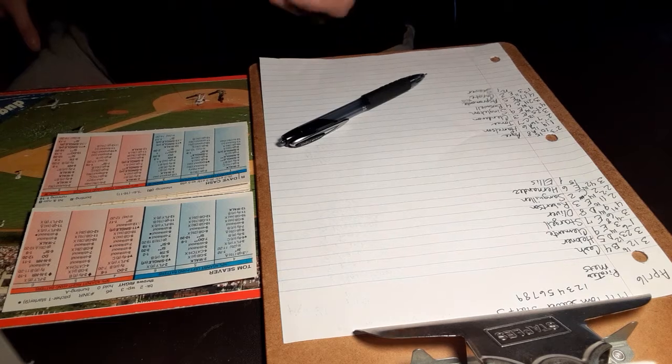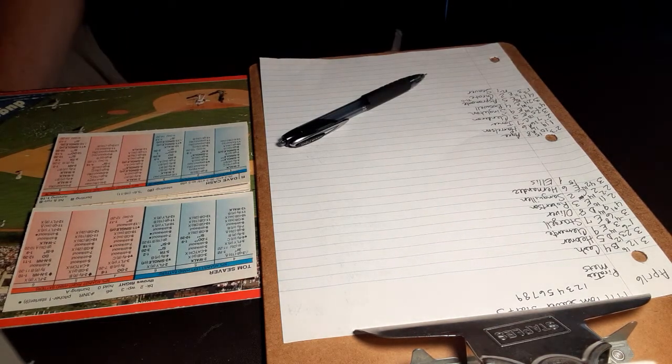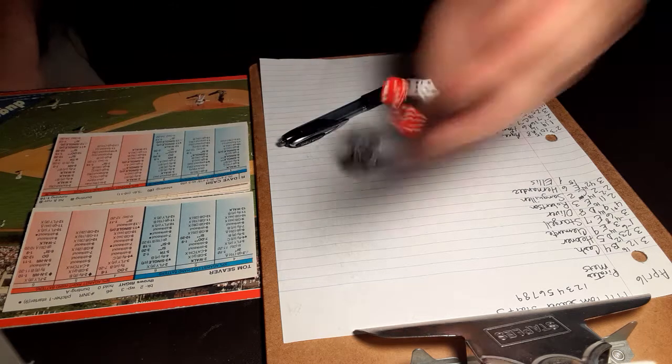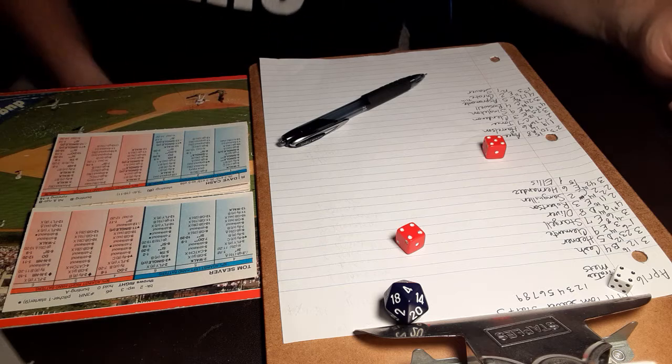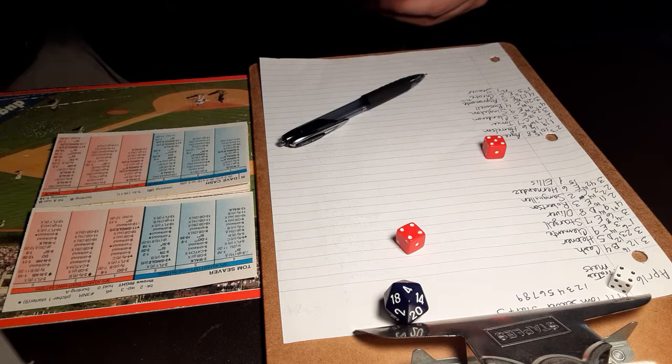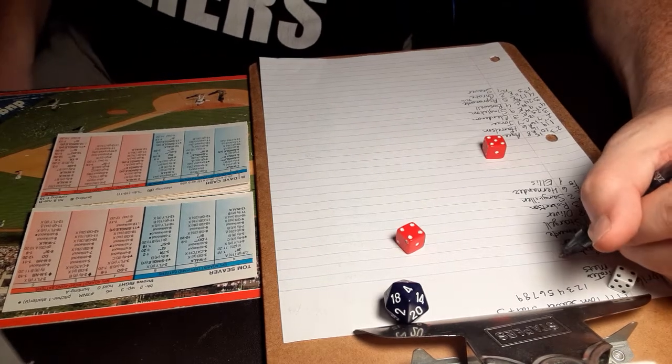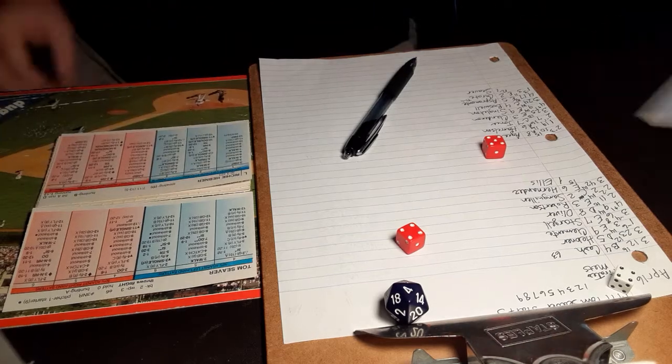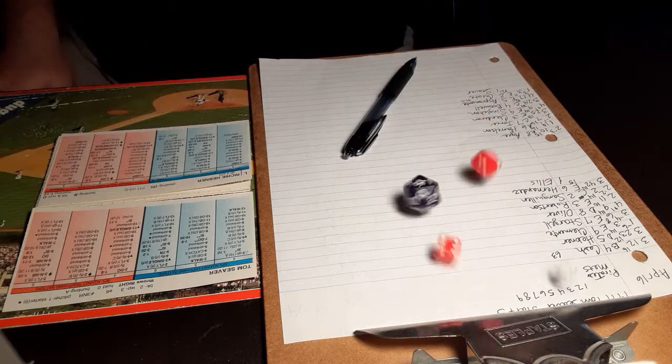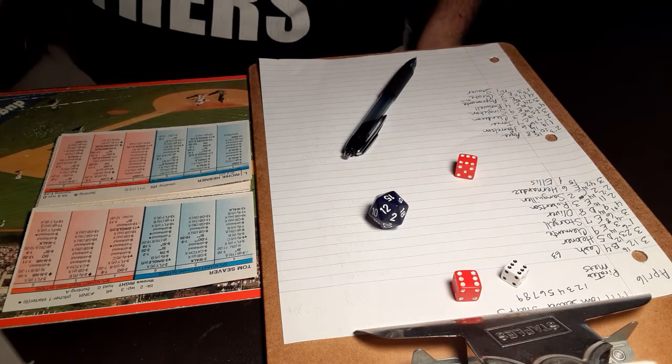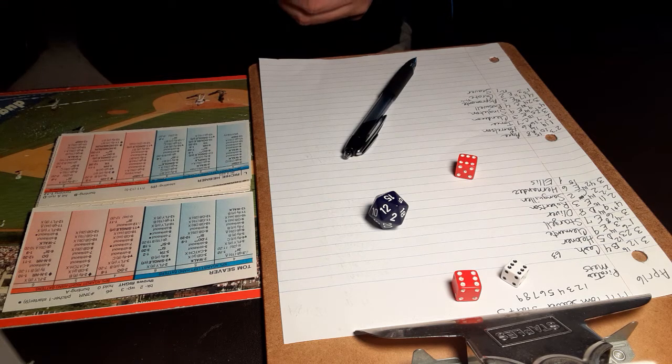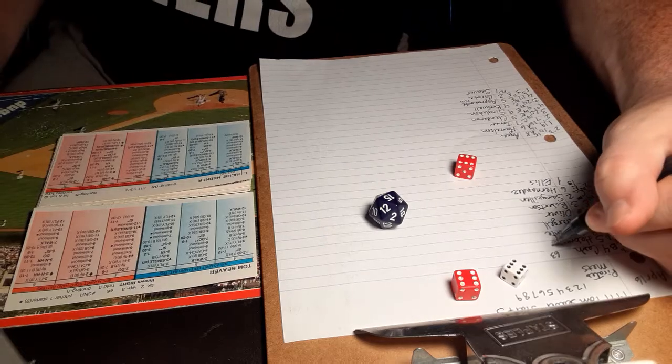Leading off and playing second base for the Pirates is Dave Cash. Here's the first pitch. 4-9 to the shortstop, that is Harrelson. One and a four should be in range, and it is, so Harrelson gets it, throws it to first, one down. Here is Richie Hebner, the third baseman. 6-12, that's to the left fielder Cleon Jones. Two and a 15 is in range, so makes the nice running catch.